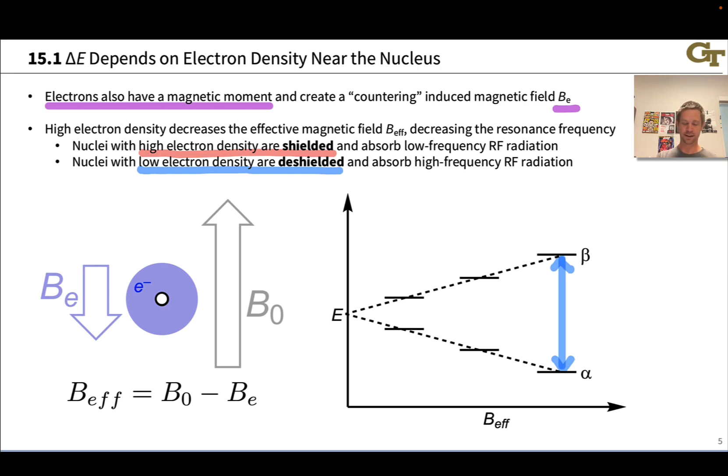Deshielded nuclei with low electron density absorb relatively high frequency RF radiation—they're over here on the right hand side of this graph where the effective magnetic field felt by the nuclei is relatively high, this energy gap is relatively high, and the frequency of radio wave light absorbed is relatively high. Shielded nuclei are over here—they have relatively low effective magnetic field felt and so a relatively small gap between their alpha and beta spin states, and they absorb relatively low frequency RF radiation. We could scan different frequencies and look for particular absorptions, and protons or hydrogens in different chemical environments, different electronic environments, are going to display different NMR precession frequencies.